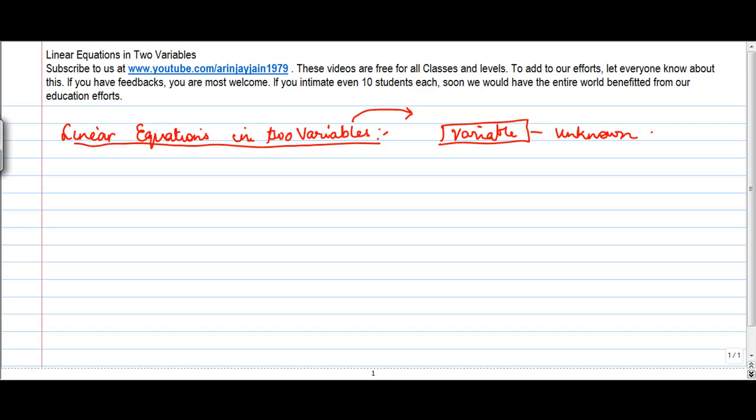which can assume different values. Let us say that Sarita went to market with rupees 100 and bought apples and mangoes.